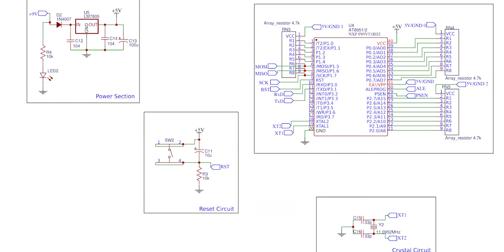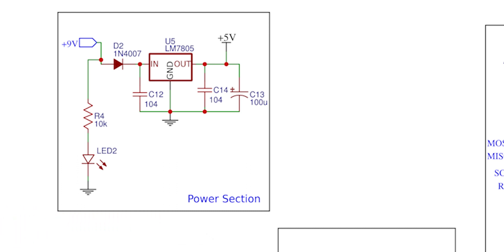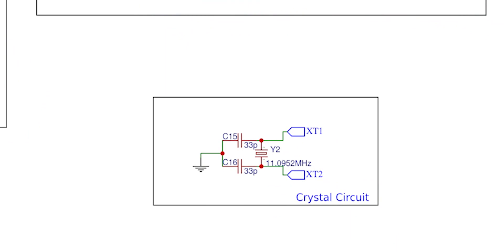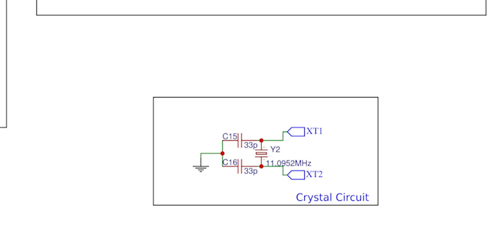For building the minimum system we basically need 3 different blocks, and here is the schematic. Number 1 is the power section — here I am using an LM7805 voltage regulator along with complementary capacitors to reduce noise in the system. I also added an LED for power indication and a diode for reverse polarity protection. Second is the oscillator section, where we need an 11.059 MHz crystal along with 33 pF capacitors. The two pins of the crystal connect to the 8051's XTAL1 and XTAL2 pins, providing the clock for our microcontroller.